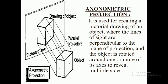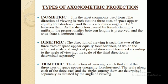Axonometric projection is used for creating pictorial drawings of an object. As you can see in the diagram, the object is drawn by taking parallel rays from the ends of the object. The lines of sight are perpendicular to the plane of projection, and the object is rotated around one or more of its axes to reveal multiple sides.